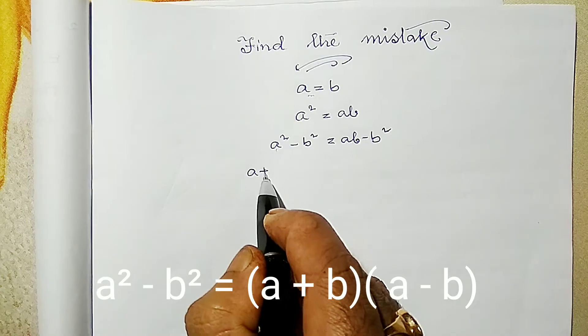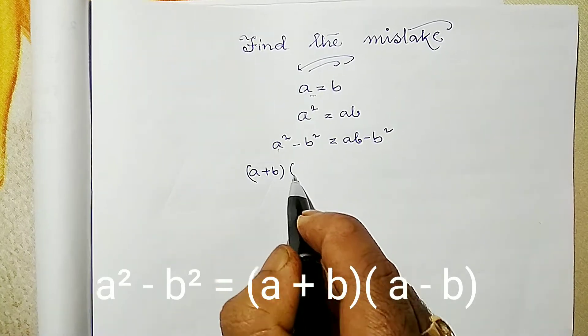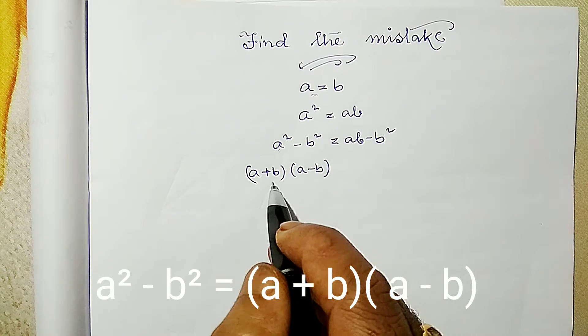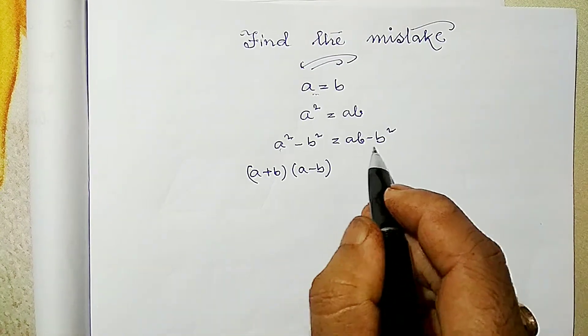Is it not? A square minus b square formula is a plus b into a minus b. And from here if I take b common, I am left with a minus b.